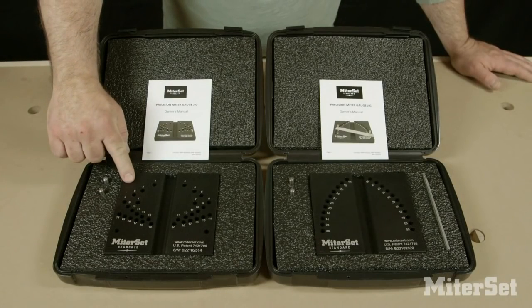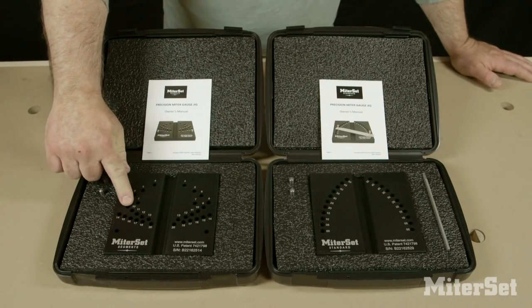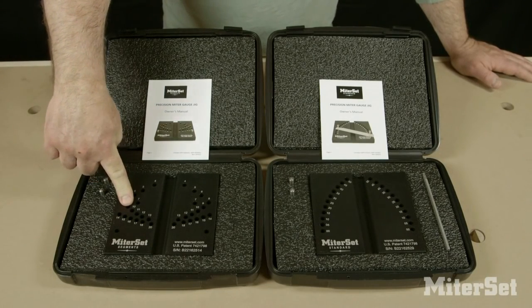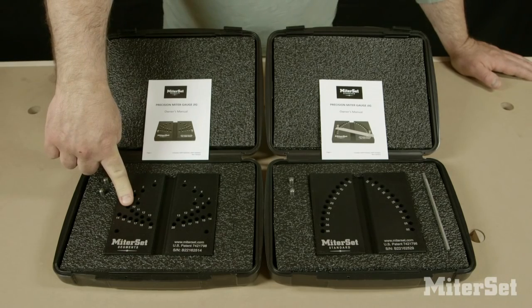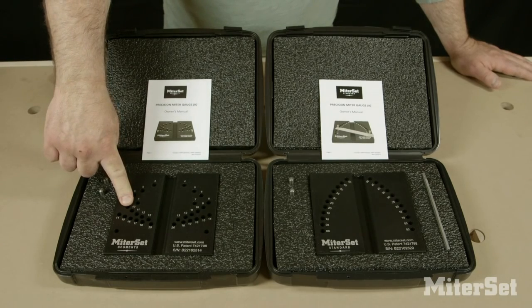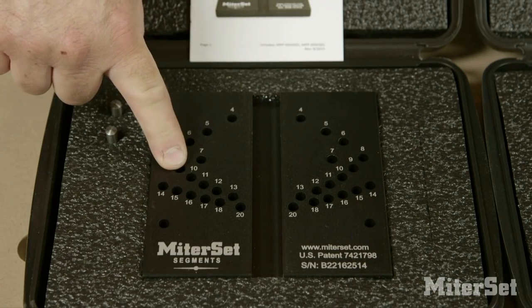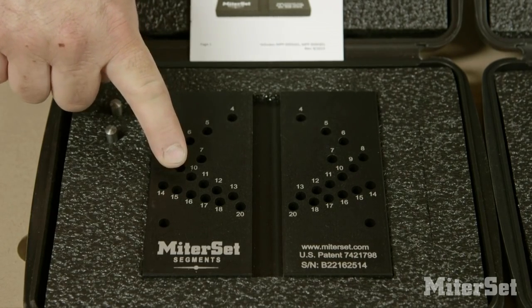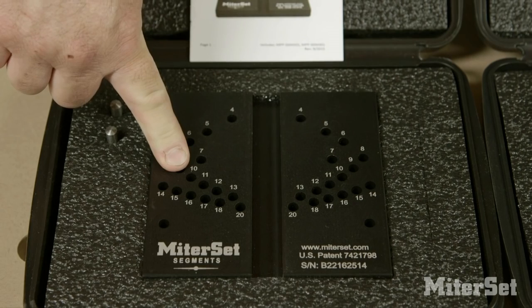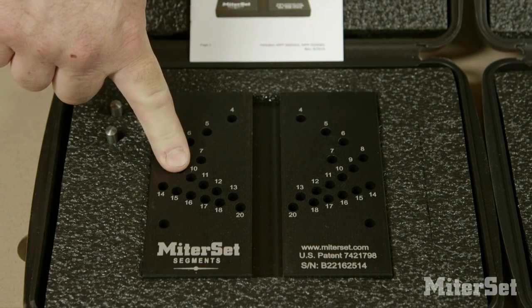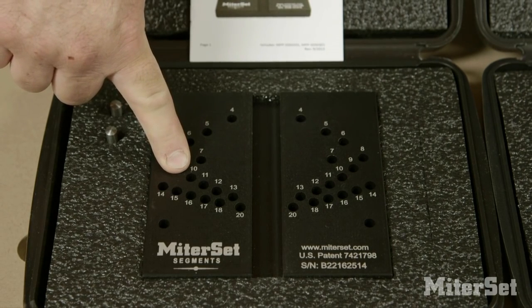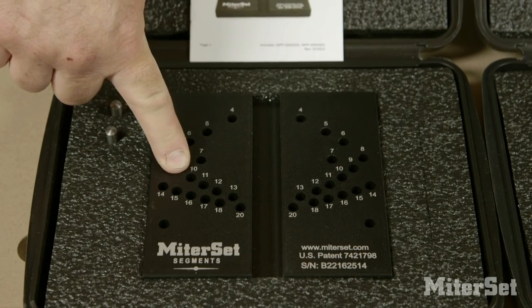MiterSet Segment is set up with the number of segments required for gluing up perfect 360-degree projects. For example, if you have a glue-up project that requires ten segments, you place your pin in the number ten, set your gauge, and that will yield ten perfect segments for 360-degree glue-ups.